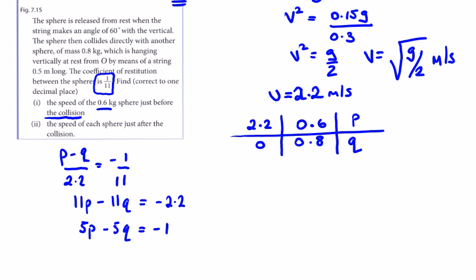My momentum equation: 0.6 times 2.2 plus 0.8 times 0 equals 0.6p plus 0.8q. So 1.32 equals 0.6p plus 0.8q.